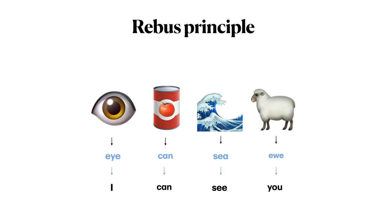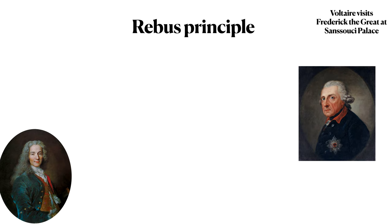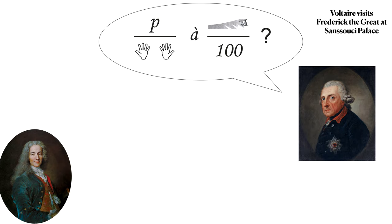This is an example where an entire sentence is represented using the Rebus principle. Let's look at another example of the Rebus principle in action. In this example, the Rebus principle will be used by one person to convey a question, and then by the recipient to convey a response to the question. In the 18th century, the philosopher Voltaire visited the Prussian noble Frederick the Great. During this visit, Frederick presented a note to Voltaire containing the following message.